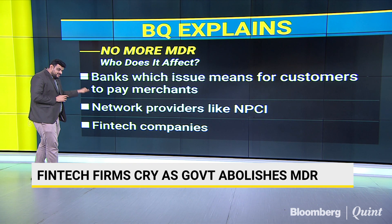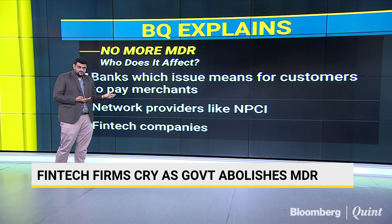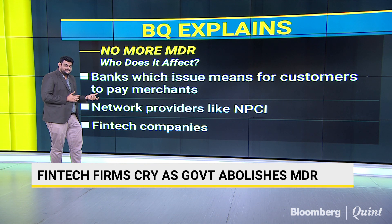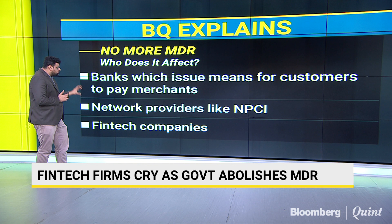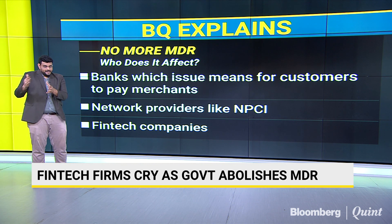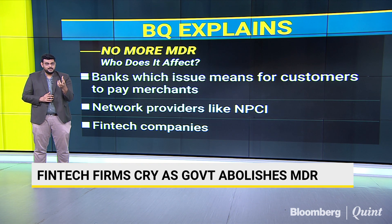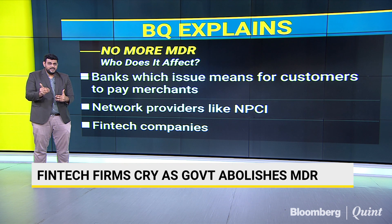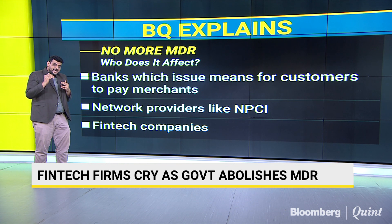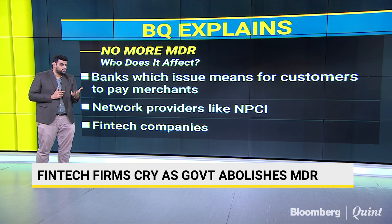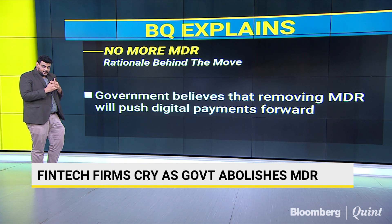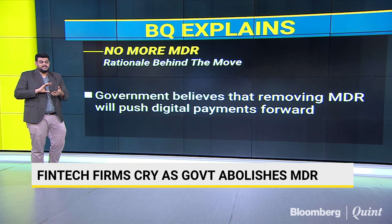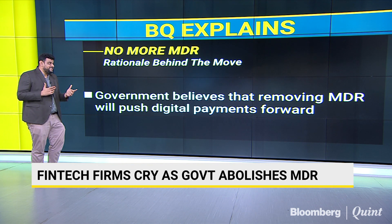The next player is the network provider. Since we are talking about UPI as well as RuPay, the NPCI is the network provider in this system — that's why banks are approaching the NPCI to remove interchange as well as switching fees. There are also fintech companies that provide the POS terminal or QR code at a merchant's store, as well as the application customers use to make payments. The MDR is split amongst all of these players depending on the kind and importance of service each provides.